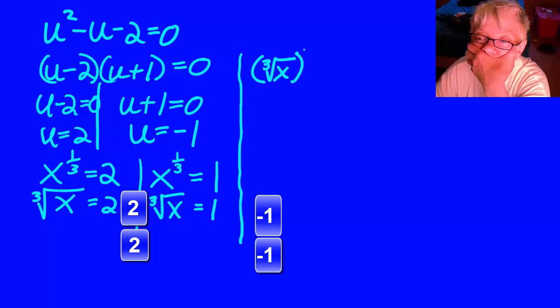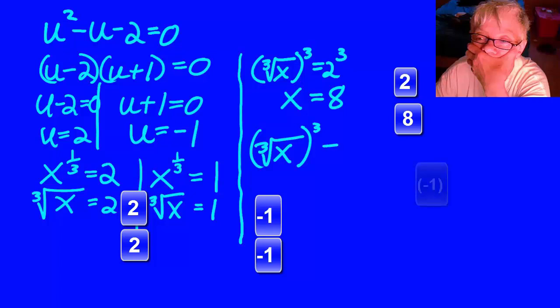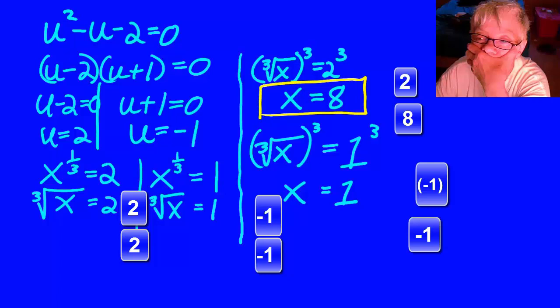To get x by itself, we need to cube both sides of the equation. That will release x from the radical and we find out x equals 8. Again, cube both sides of the equation and we find that x equals negative 1. Our solutions are 8 and negative 1.